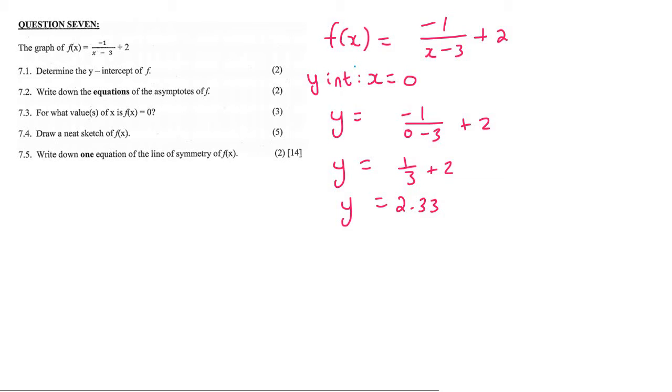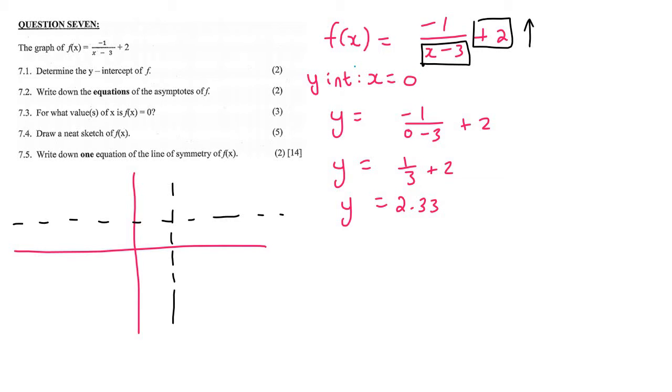Question 7.2: write down the equations of the asymptotes. On a hyperbola we typically have two asymptotes. To find those asymptotes, you look at the equation. This part moves the graph up and down - plus 2 moves the graph up by 2 units. And x minus 3 moves the graph 3 places to the right. So we would expect that our asymptotes would be at y = 2 and x = 3.